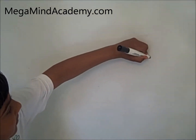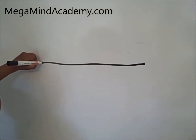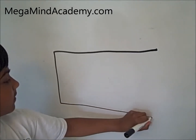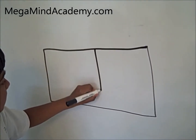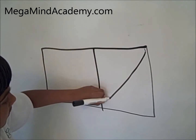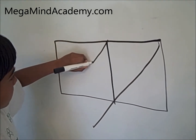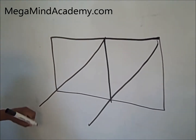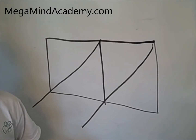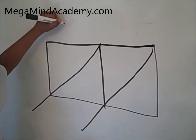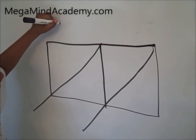Today I'm going to show you a method called the lattice method for multiplication. Here's the diagram. For example, the equation is 29 times 9.